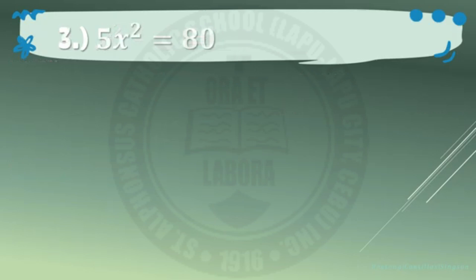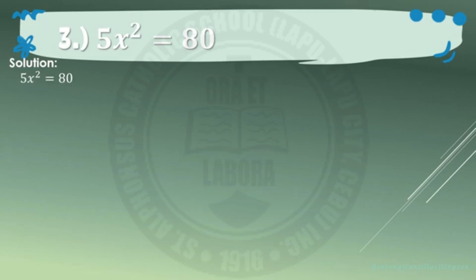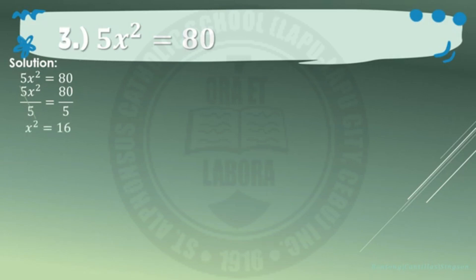Example number 3: 5x squared equals 80. Solution. 5x squared is our quadratic term, but we need to make sure the value of a is 1. To do that, divide both sides by 5. By dividing both sides by 5, we cancel out 5, resulting in x squared equals 16, because 80 divided by 5 is 16.